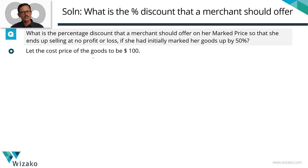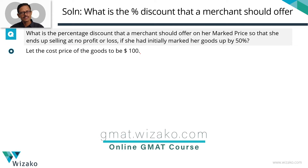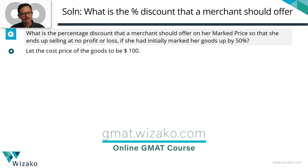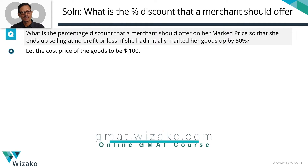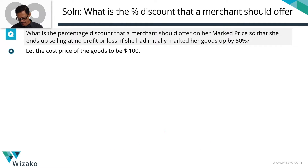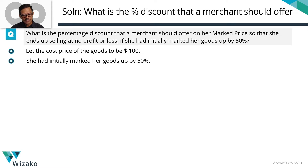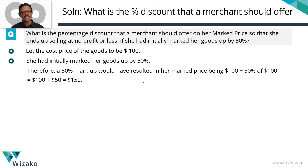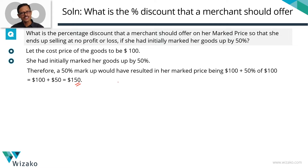Let the cost price for the merchant be $100. The merchant is marking her goods up by 50% of the cost price, so her marked price is going to be equal to 100 plus 50% of 100, which takes the marked price up to $150. What does the merchant do? She offers a discount — on this marked price — such that she ends up selling at no profit, no loss.